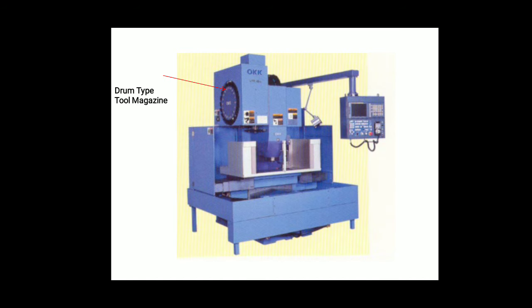This is an actual machine image where the red arrow indicates the drum type tool magazine. In this type, only a limited number of tools can be stored. This is the actual picture of that machine.